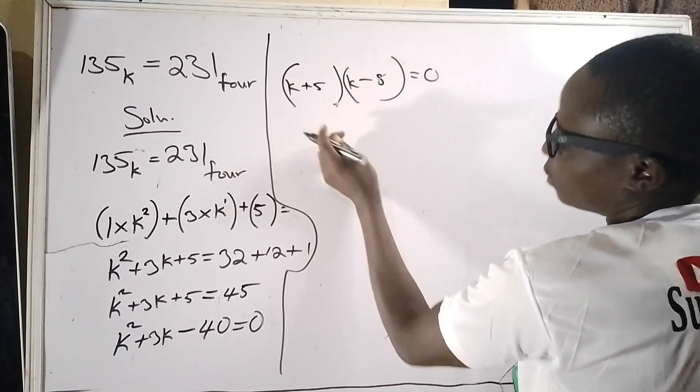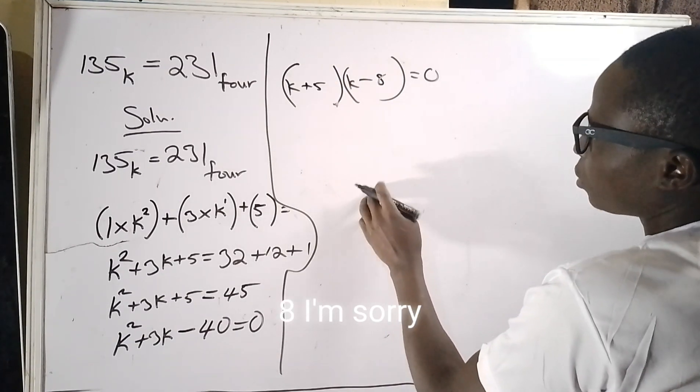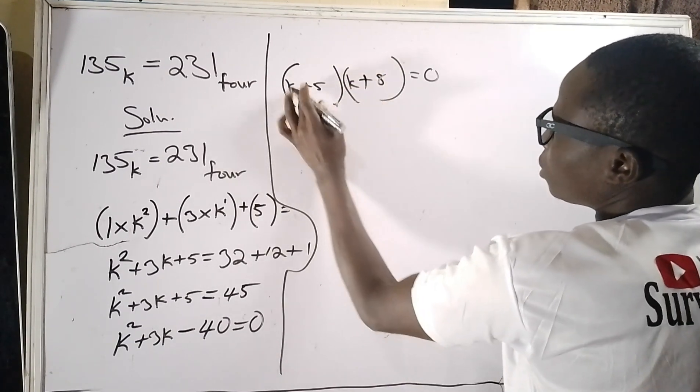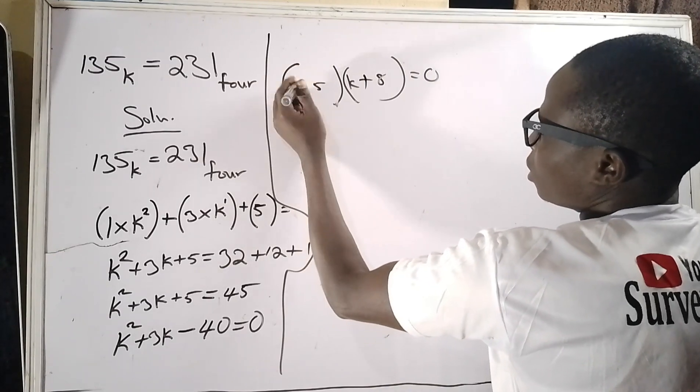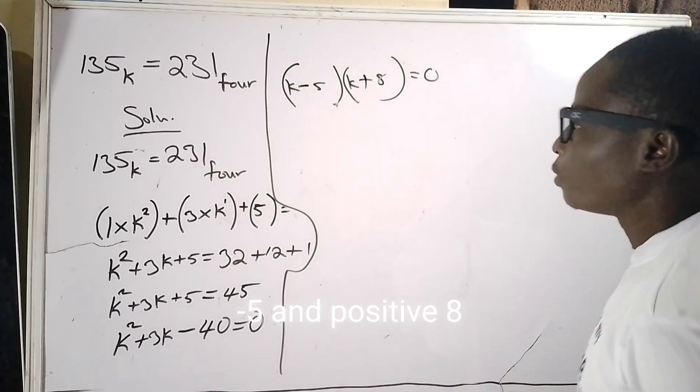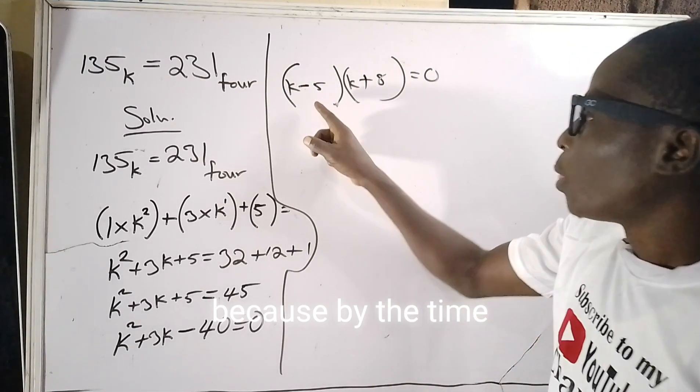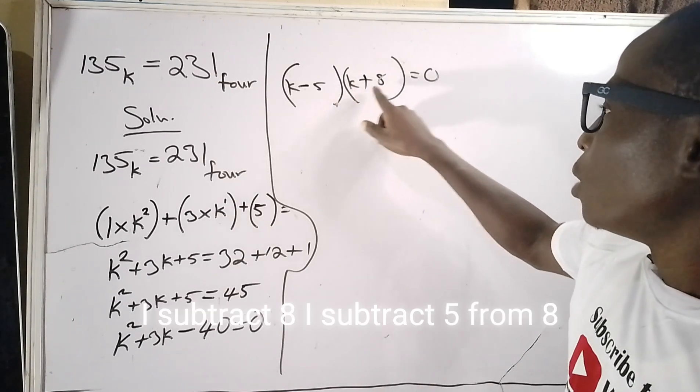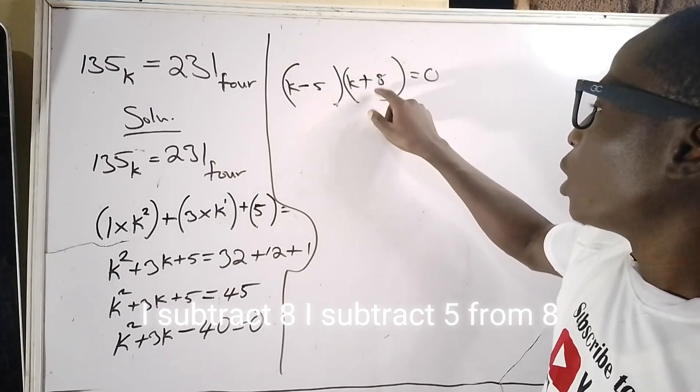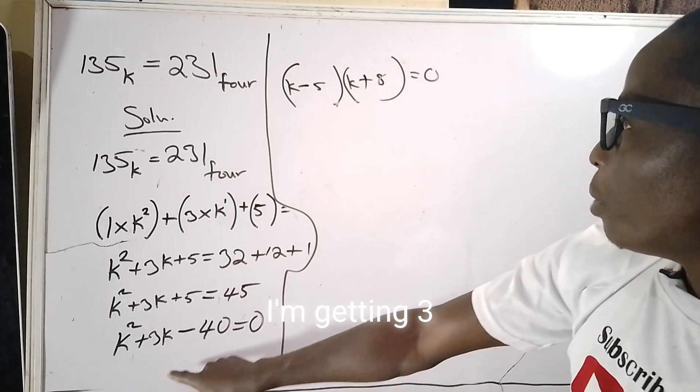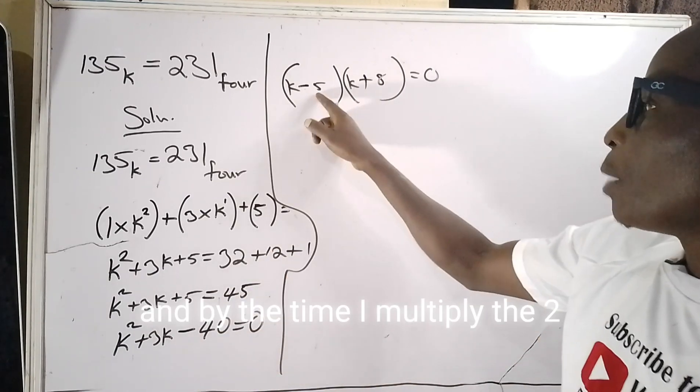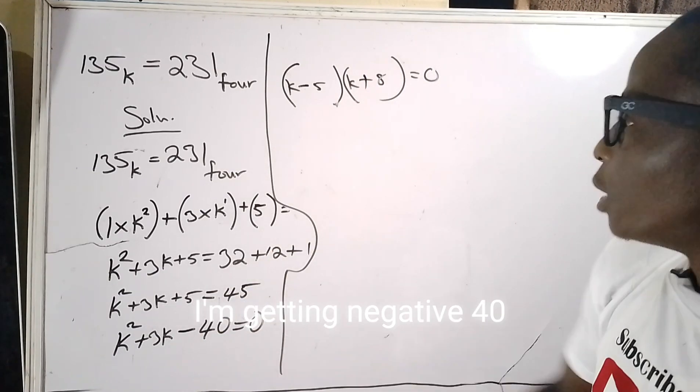And I believe it should be negative 5 and positive 8, because by the time I subtract 5 from 8, I'm getting 3, and by the time I multiply the two, I'm getting negative 40.